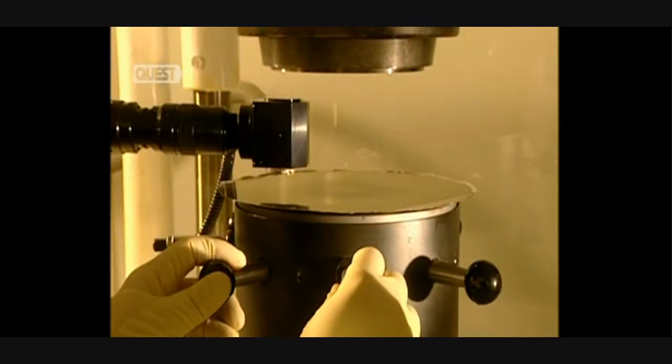The die is then stamped out into the desired shape, with any excess material being used for recycling.